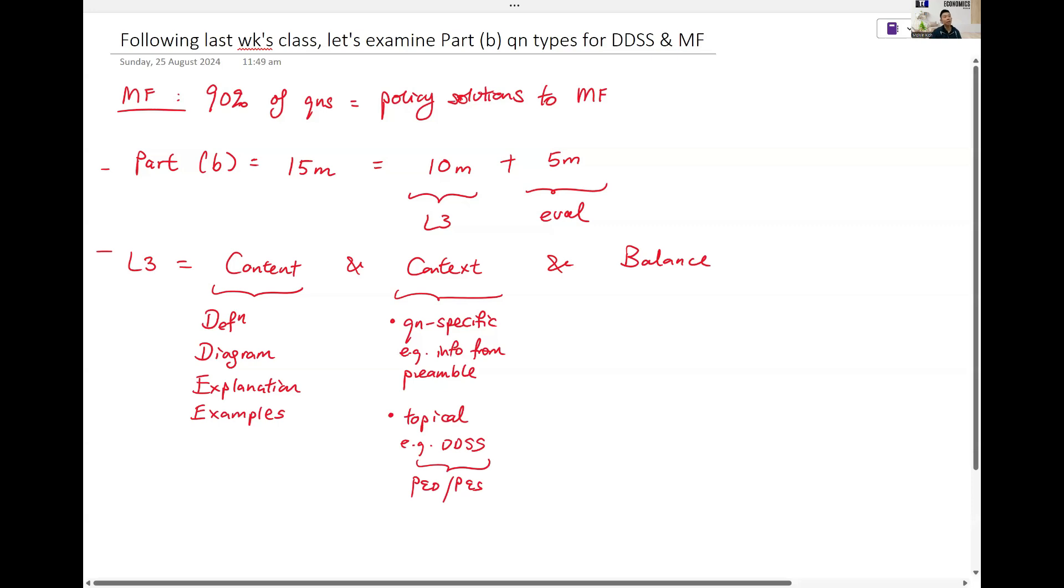Last week, I told you, right? DDSS questions, they will tell you the factors that shift demand, shift supply. They probably not tell you what's the PED and PES. You have to conjure up the points yourself.